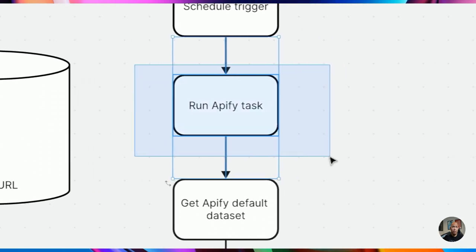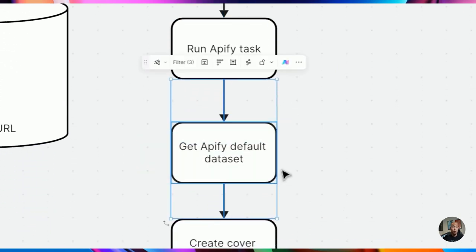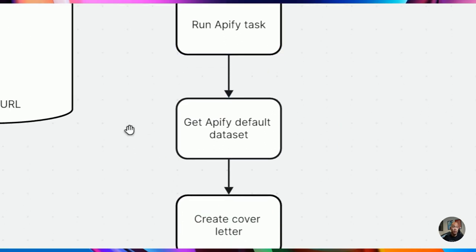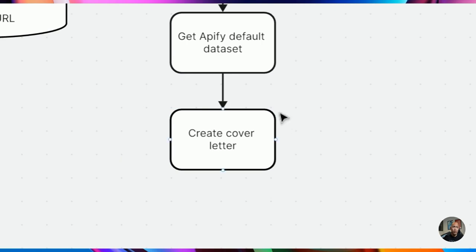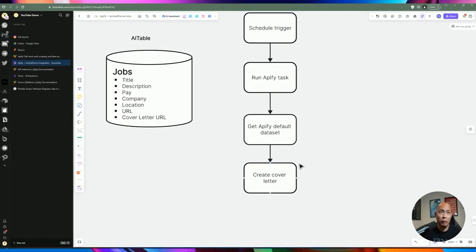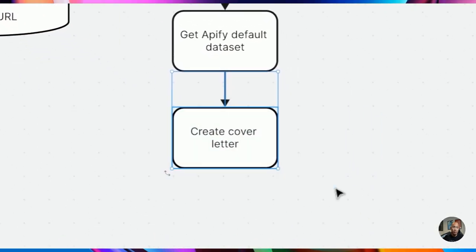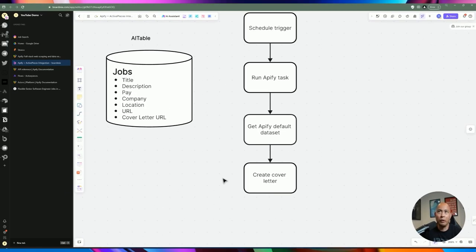A task won't necessarily return a dataset right away, so we'll have to run an extra step to grab the default dataset once the task has completed and succeeded. From there we loop through each result and create a cover letter for each one. There's also a matching step where we compare our defined skill set against the job description, and AI decides if the job is worth applying for. If it's not a match, we skip it to save on AI tokens.